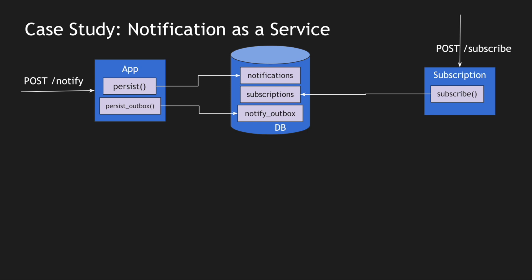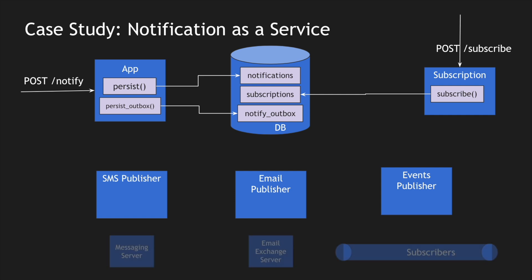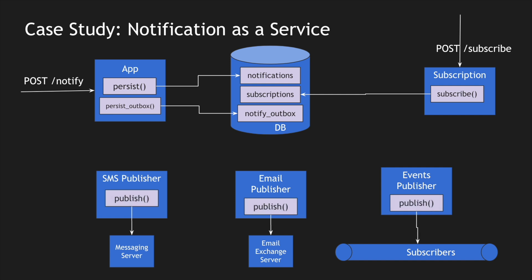The concept of a notification as a service system is that you notify subscribers based on their subscription and the type of message. I'm a producer adding a new notification, and a subscriber has subscribed to those notifications. To notify subscribers, I need publishers. I have three subscription types: event subscription, email subscription, and SMS subscription. Depending on the subscription type from the subscriptions table, I pick up the message and publish it to the corresponding system.